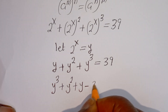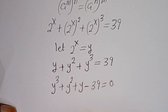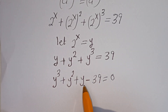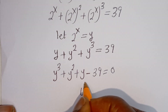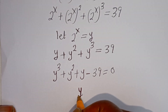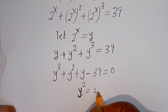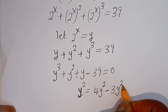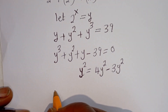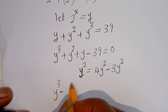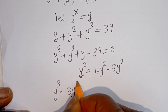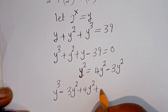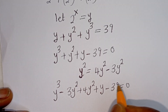Then we have Y cubed plus Y squared plus Y. Bringing 39 to this side gives us Y cubed plus Y squared plus Y minus 39 is equal to 0. Note that 39 is divisible by 3, so Y squared can be written as 4Y squared minus 3Y squared. This gives us Y cubed minus 3Y squared plus 4Y squared plus Y minus 39 is equal to 0.